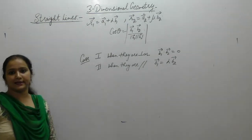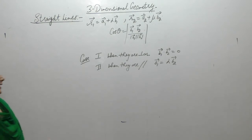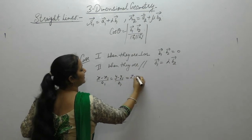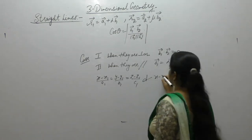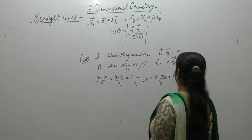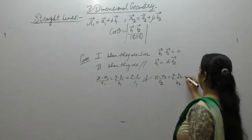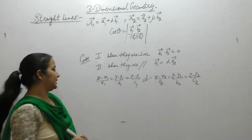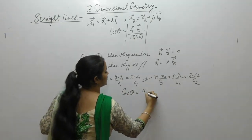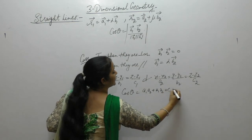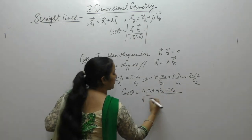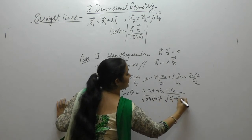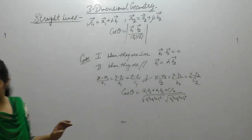If the Cartesian equation of the line is given as (x minus x1)/a1 = (y minus y1)/b1 = (z minus z1)/c1, and the other line as (x minus x2)/a2 = (y minus y2)/b2 = (z minus z2)/c2, then we use the formula: cos θ = (a1·a2 + b1·b2 + c1·c2) divided by the square root of (a1²+b1²+c1²) times (a2²+b2²+c2²).